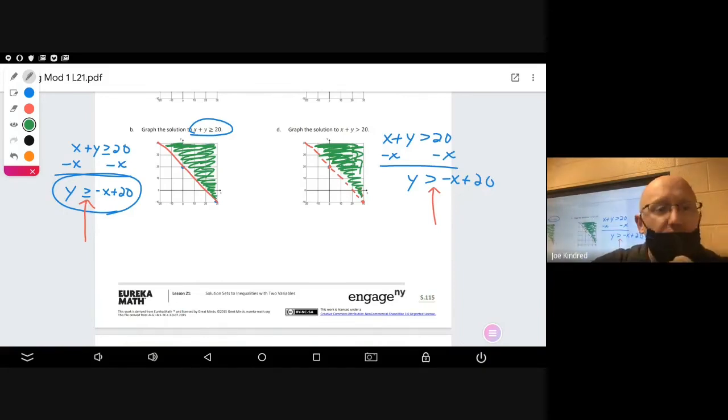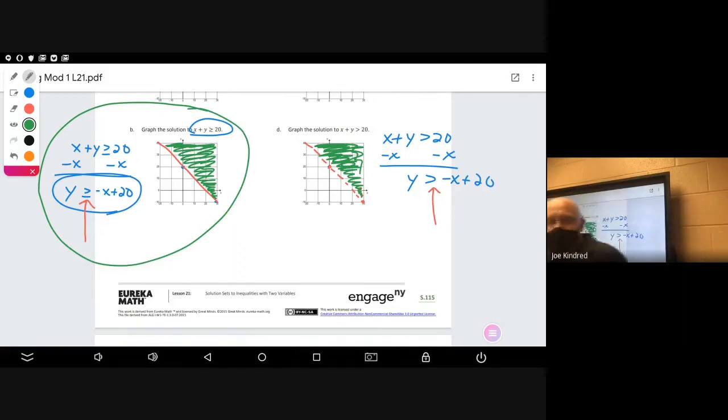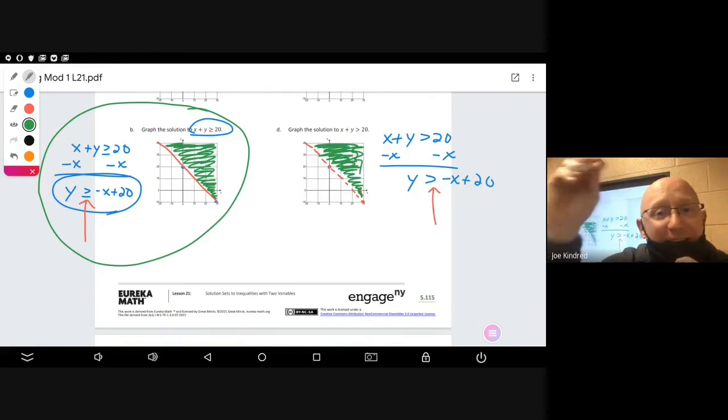You had a chance to do B and D, and here's what your solution should have been. Notice how I took each one of these and I rearranged and solved for y so that I could get a better idea of where the solutions were going to be. In the first one, in B, notice that the line is solid because y is greater than or equal to. Also notice I've shaded the green above the line because of that. In D, notice the line is dotted because it's not equal to, it's just greater than. And notice the green is above the line as well.